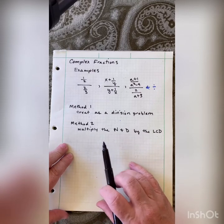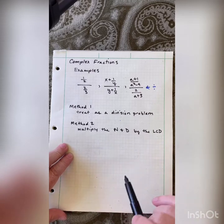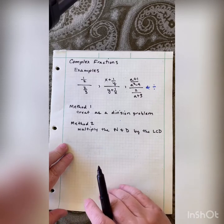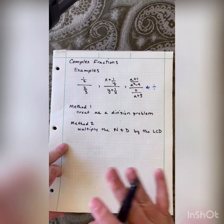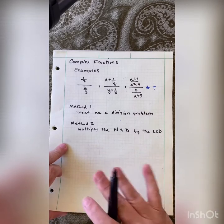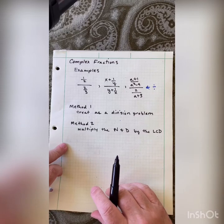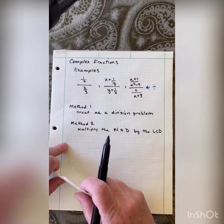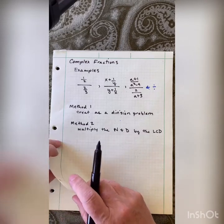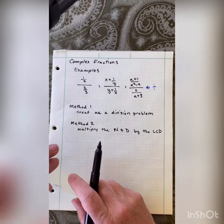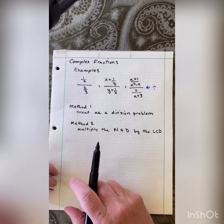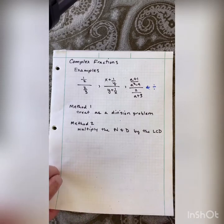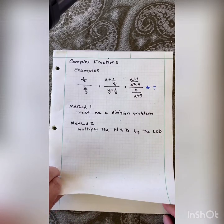Method number two is to multiply the numerator and denominator by the LCD. I don't mind if you do it either way — whichever way you're comfortable with. Just pick a way and do it. I do about half one way and half the other way, so if you're comfortable with one way, just do it that way.